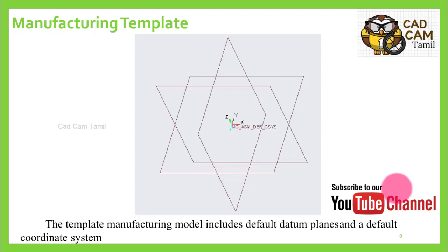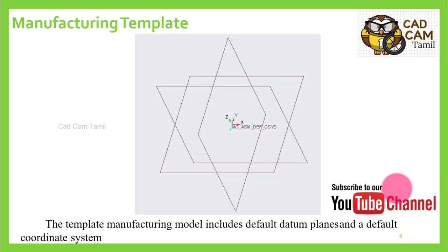In most industry cases, you will choose the default template. The default is now available — there are now three default templates. I have four templates with four datum planes and five datum planes. You can open and create, and access to create. This is the Manufacturing Template.